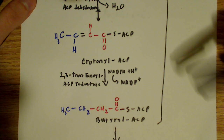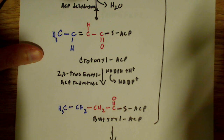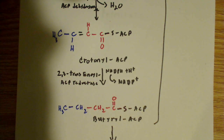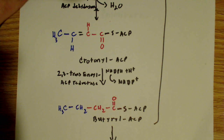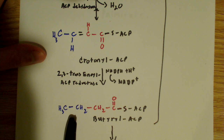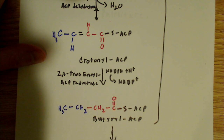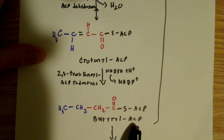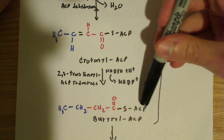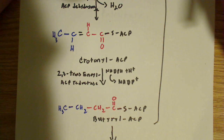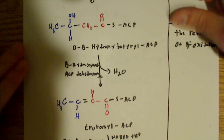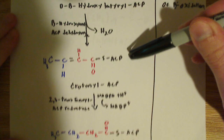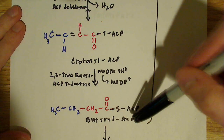The next step after that is another reduction, catalyzed by 2,3-transenoyl-ACP reductase. NADPH is being oxidized to NADP+. What you wind up with is removal of that double bond, giving you butyryl-ACP, still with the acyl-carrier protein on there. So we went through a reduction, a dehydration, and then another reduction — and that's butyryl-ACP.